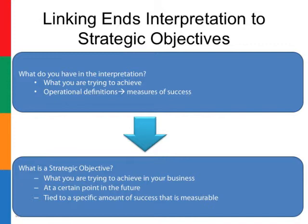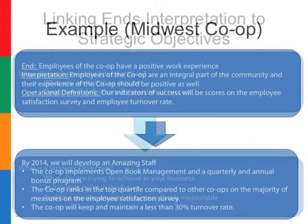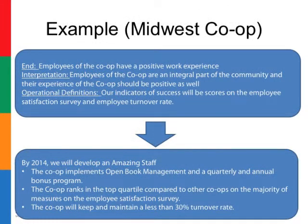So we've got the interpretations linking to some of the first parts of your strategic planning document. Here's an example of a Midwest co-op. Here's the end: employees of the co-op have a positive work experience. The interpretation from this general manager is employees of the co-op are an integral part of the community, and their experience of the co-op should be positive as well. Operational definitions: our indicator of success will be scores on the employee satisfaction survey and employee turnover rate.